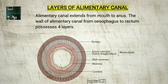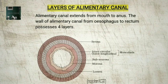The wall of the alimentary canal from esophagus to rectum possesses four layers: 1. Serosa — the outermost layer, made up of a thin mesothelium with some connective tissue. 2. Muscularis — formed by smooth muscles usually arranged into an inner circular and an outer longitudinal layer; an oblique muscle layer may be present in some regions. 3. Submucosa — formed of loose connective tissues containing nerves, blood, and lymph vessels.